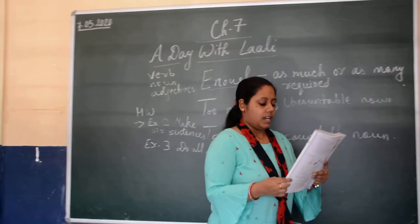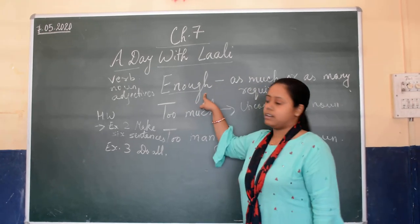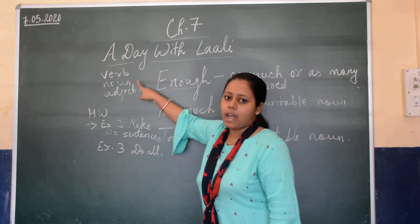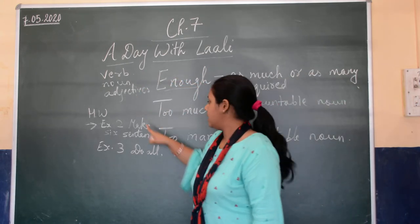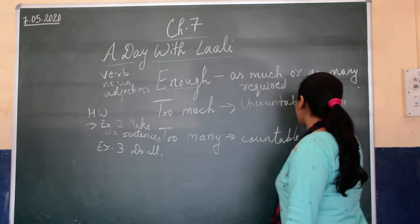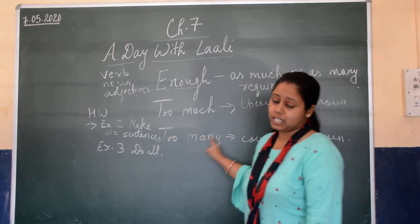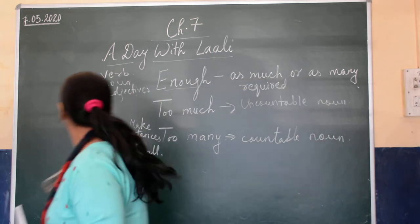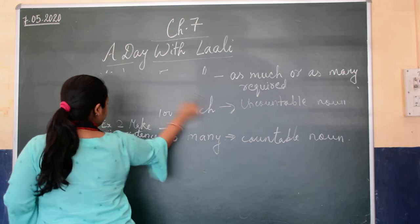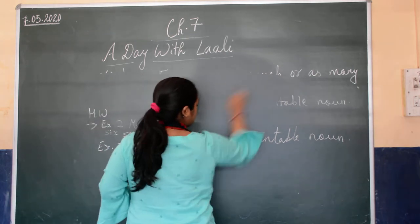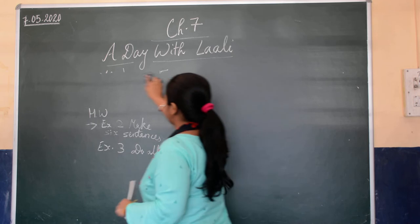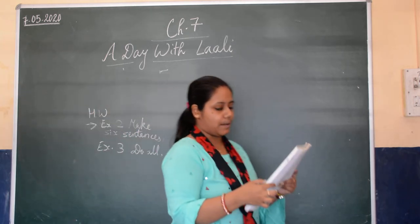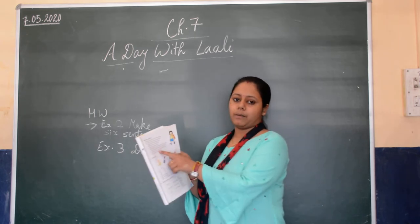I hope it is clear for you. To recap: enough is used with verb, noun, and adjectives. Too much is used with uncountable nouns. And too many is used with countable nouns. Now go through this chapter and read it, but we do not have to do exercise number four.